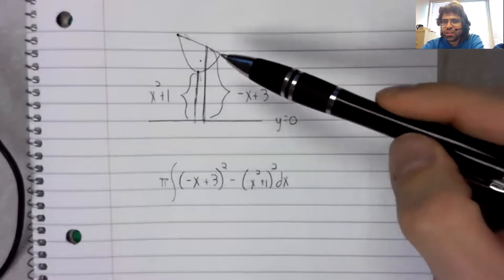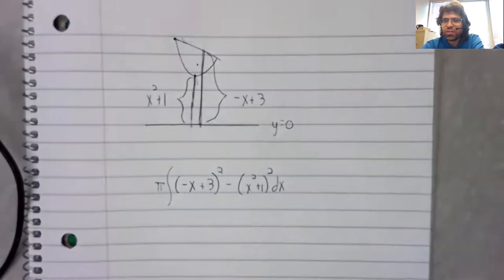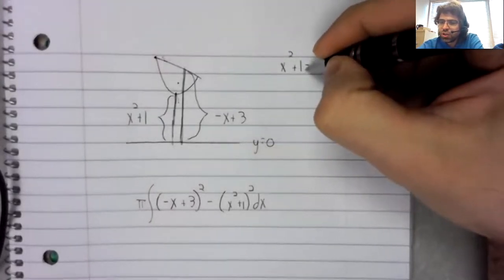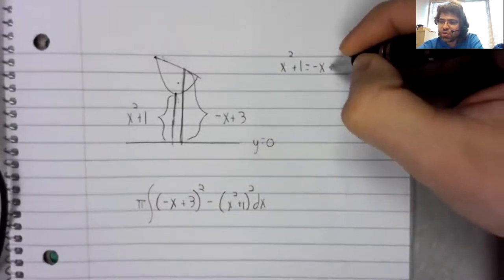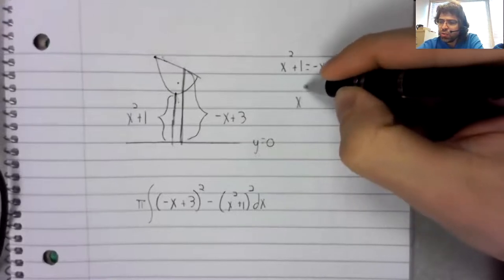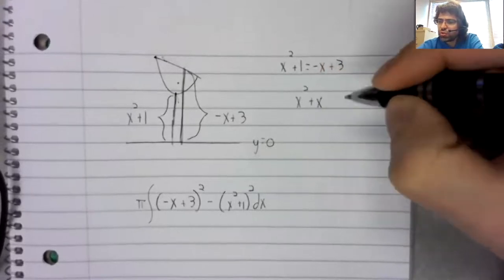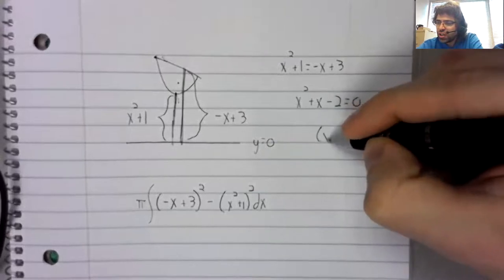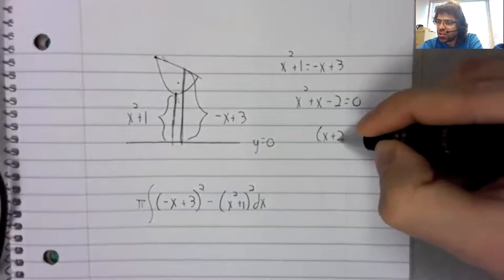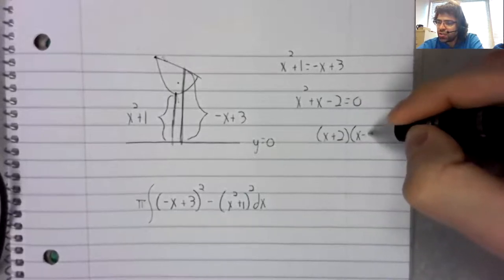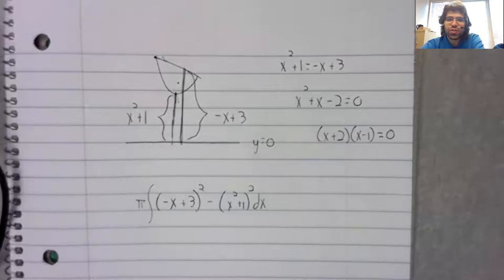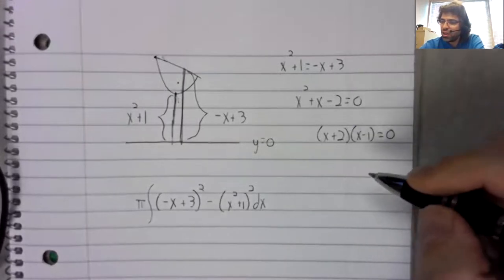The outer radius squared minus the inner radius squared with pi out front. This region begins and ends at a point of intersection. So you could do this algebraically, or you could use your calculator's intersect feature. I'm all for using technology.